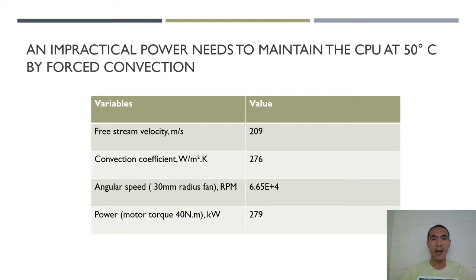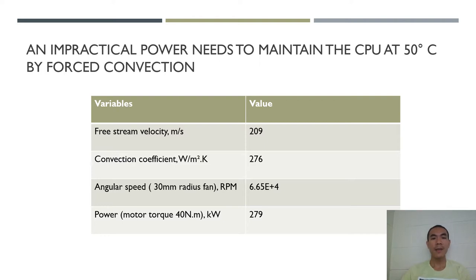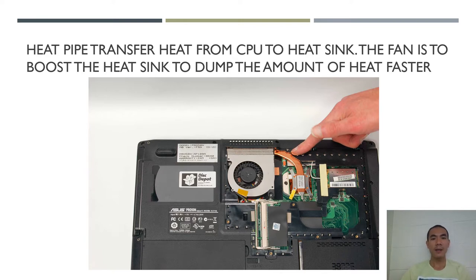To achieve that operation temperature of 50 degrees Celsius, we have to create a convection coefficient of 276 and a free stream velocity of about 209 meters per second. That is very high, and creating that high velocity would consume 279 kilowatts — which is completely impractical for a laptop. So here I'm going to show you the entire CPU cooling system using a heat pipe combined with the fan.